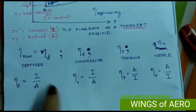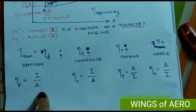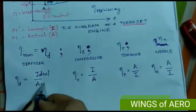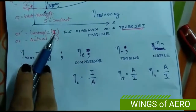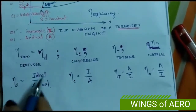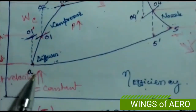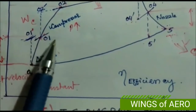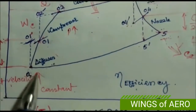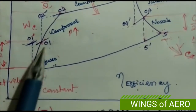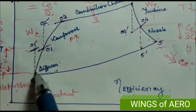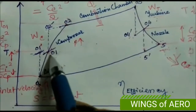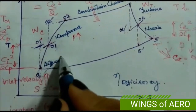For the diffuser efficiency η_d, 'ideal' means the isentropic relation. Point A is the starting point and 0-1 is the actual point, while 0-1 dash is the ideal or isentropic point. Since 0-1 dash is at higher temperature than A, we write η_d as (T01' − T_a) divided by (T01 − T_a).